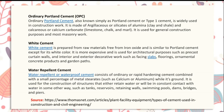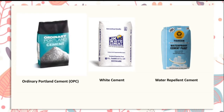Water repellent or waterproof cement consists of ordinary or rapid hardening cement combined with a small percentage of metallic materials such as calcium or aluminum while it is ground. It is used for the construction of structures that retain water or are in constant contact with water, such as tanks, reservoirs, retaining walls, swimming pools, dams, bridges, and piers. Pictures of different types of cement — ordinary Portland cement, white cement, and water repellent cement — are shown.